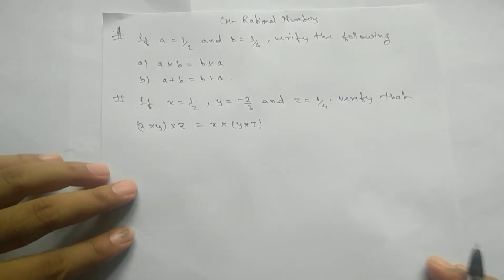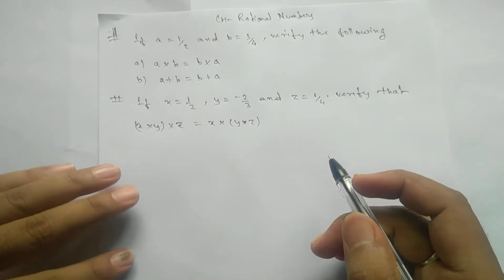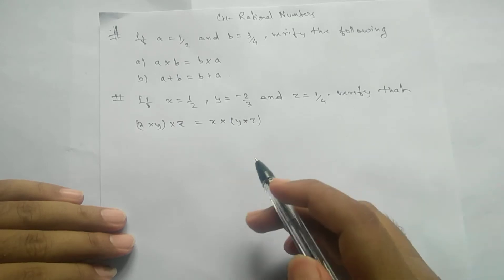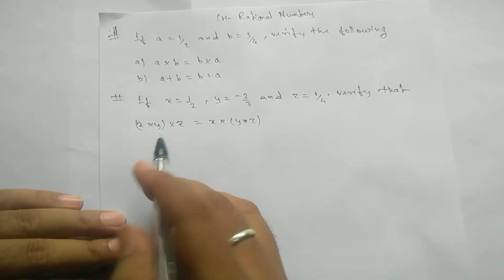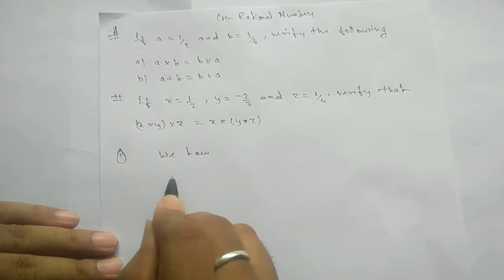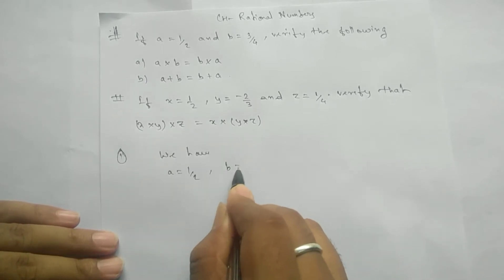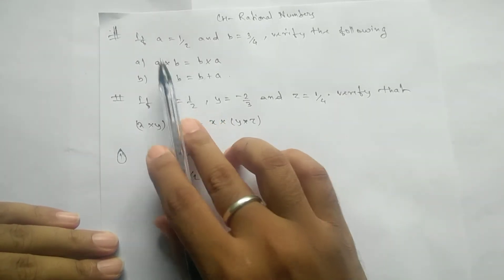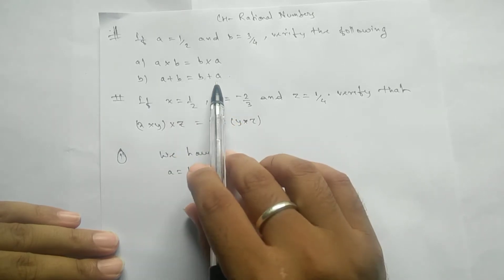Namaste students. Here we have two problems related to verification of commutative property and associative property. For number one, we have a equals to one-half and b equals to three by four. We are going to show verification for commutative property under multiplication and commutative property under addition.